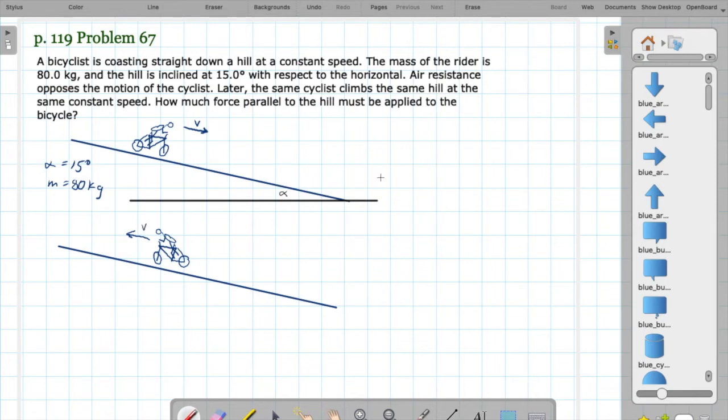We can analyze this as a statics problem. So we'll start out with a free body diagram in the first case. In the first case, the forces acting on the cyclist are its weight, which is going to be mg, and then we have some other forces.